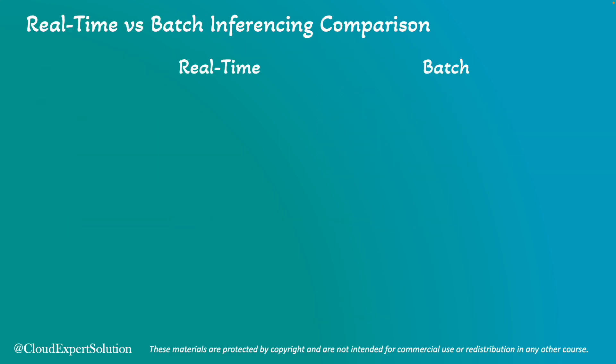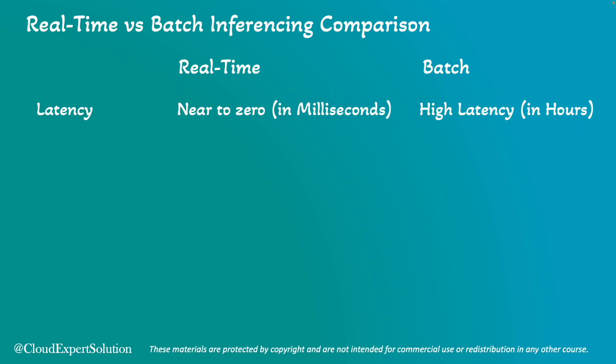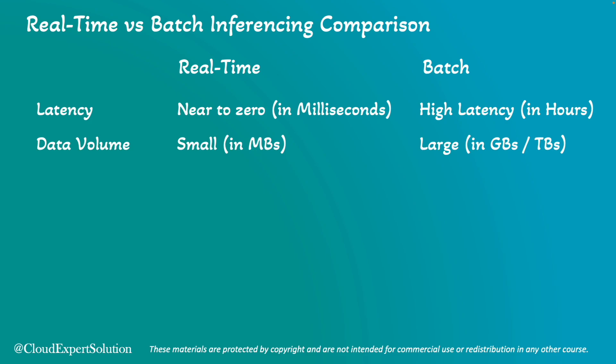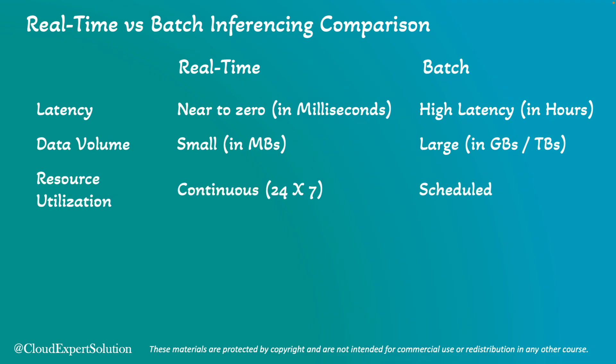Now let's compare real-time versus batch inferencing side by side. In terms of latency, real-time inferencing can generate outcomes in milliseconds, whereas batch inferencing latency is in hours — making it applicable only where latency is not a critical factor. In terms of data volume, real-time handles small amounts in megabytes, while batch processes gigabytes or terabytes. For resource utilization, real-time requires 24/7 continuous running, whereas batch only requires resources on schedule. Finally, real-time inferencing is ideal for latency sensitive use cases, while batch inferencing is ideal for latency-tolerant applications.